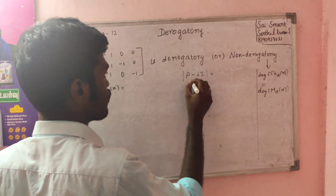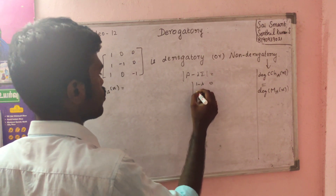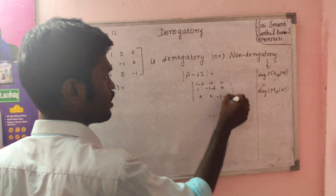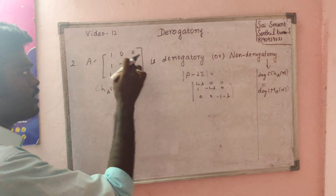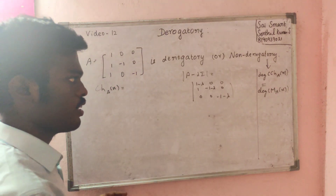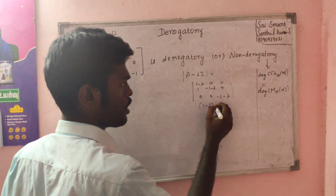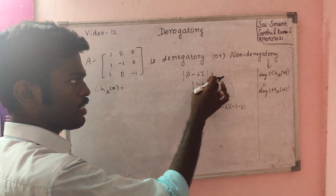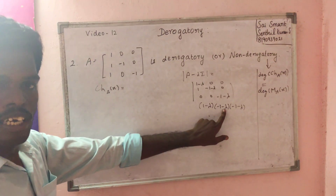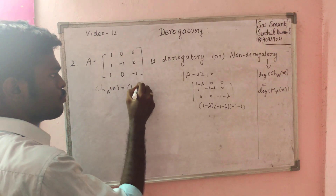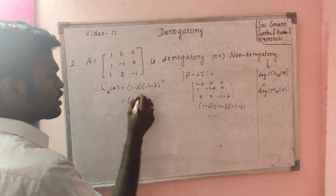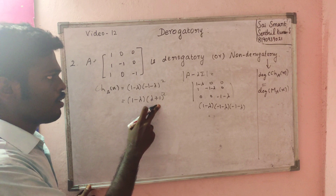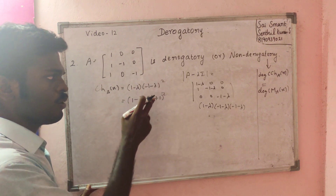For the example matrix, the characteristic polynomial is computed from det(A minus lambda I). Working through the entries, we get: (1 minus lambda) times (minus 1 minus lambda) squared, which is (1 minus lambda) times (lambda plus 1) squared.